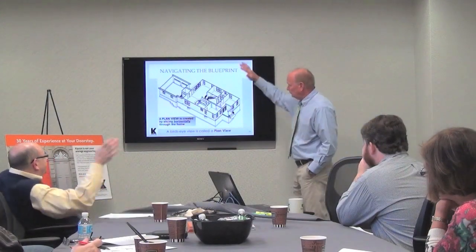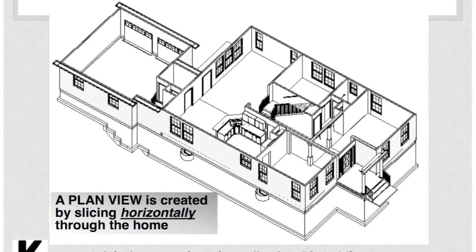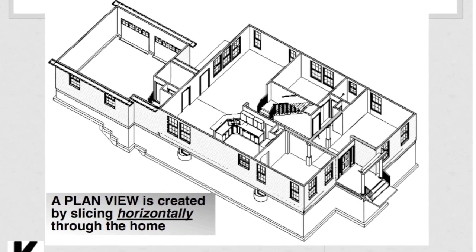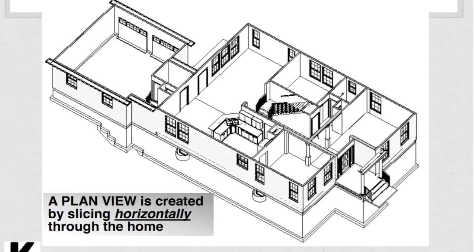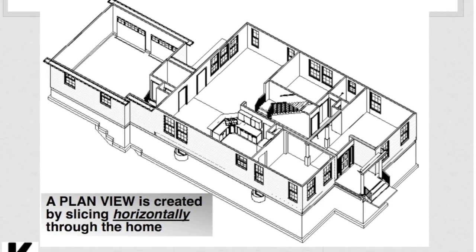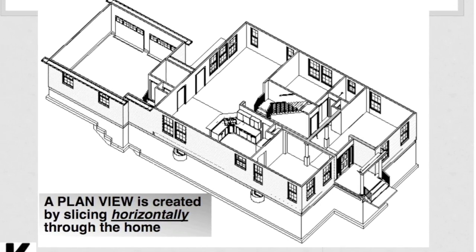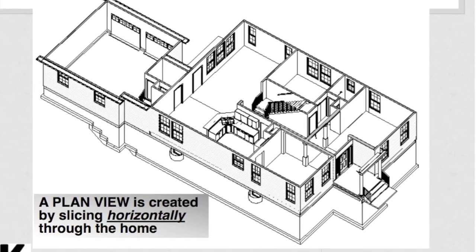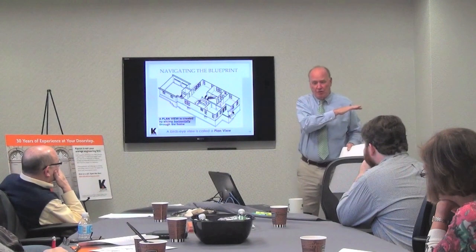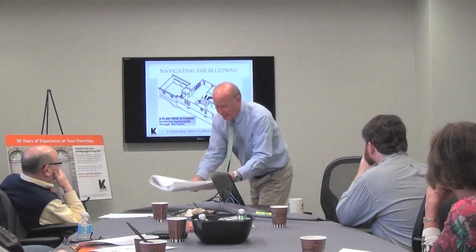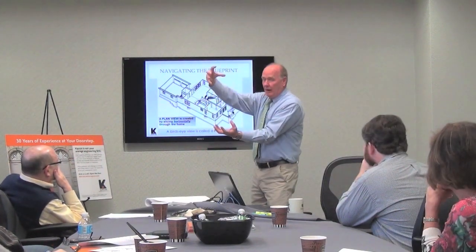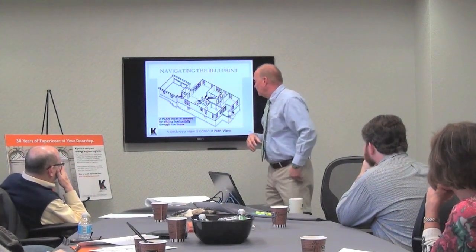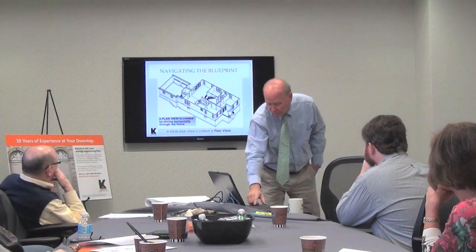The plan view is taking an object, slicing it in half, opening it up, and looking straight down onto it. Typically, when a building is sliced for a plan view for a set of drawings, they slice a structure about three or four feet. So when you slice it and open it up, we have things above and things below. It's a bird's eye view.